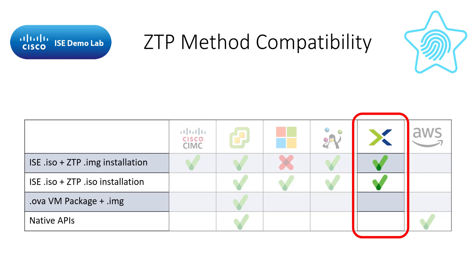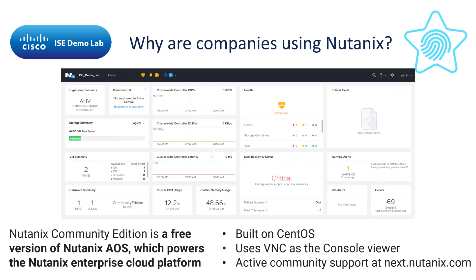We can use either the .img or .iso format for the ZTP configuration image. I'll use the ISO in this video, but the IMG steps are exactly the same. One of the most compelling reasons for using Nutanix is the fact that the Community Edition is a free version of the software built on CentOS and uses VNC as the console viewer. There is a knowledgeable and active community for any assistance you may need, but don't rely on support from Nutanix for this free version.